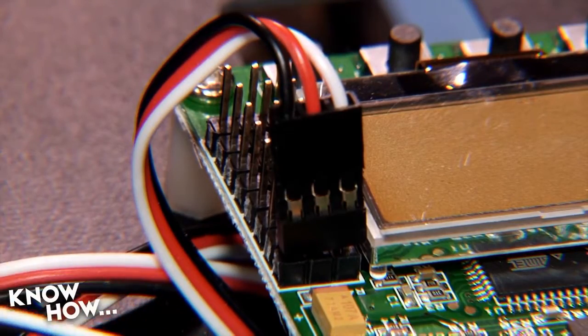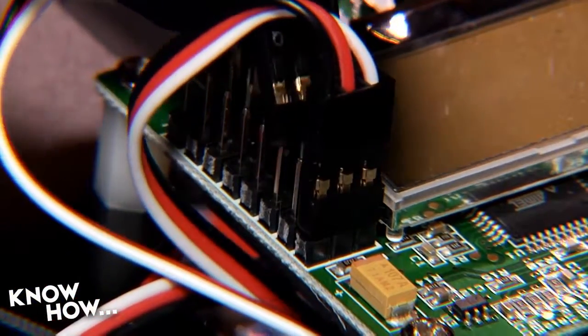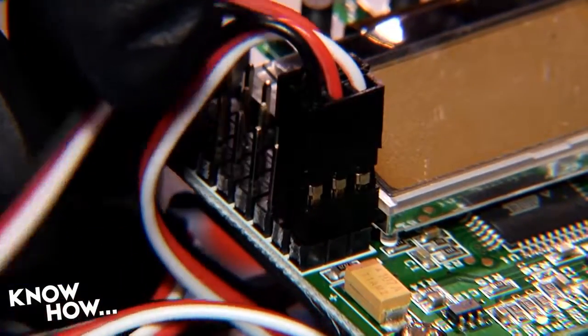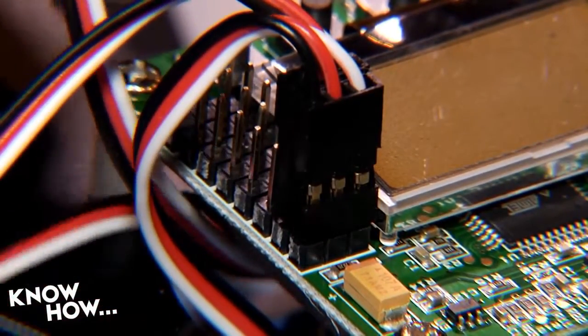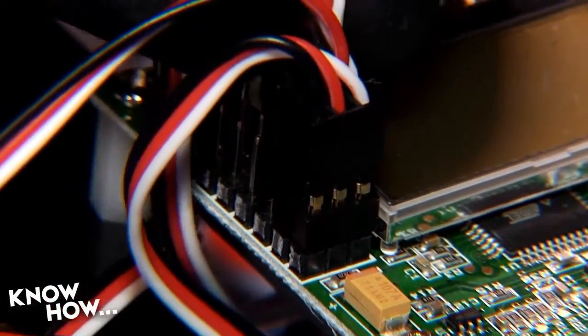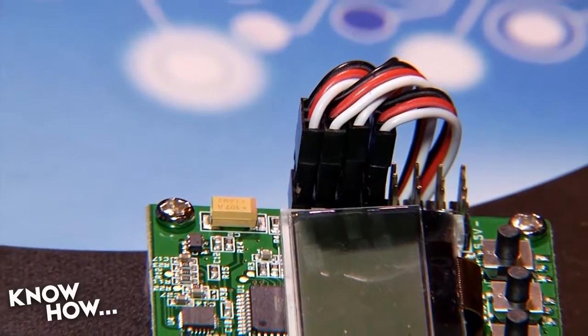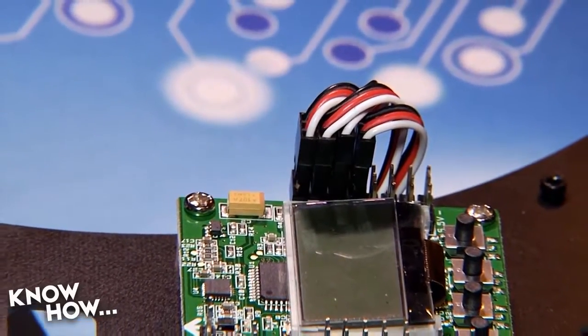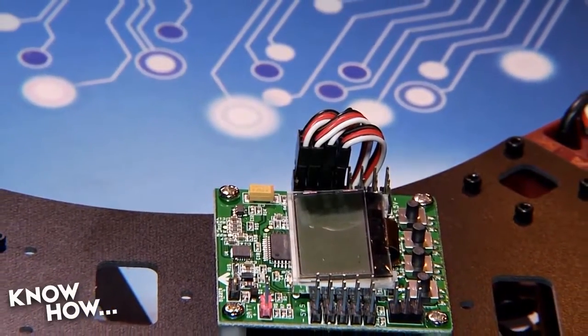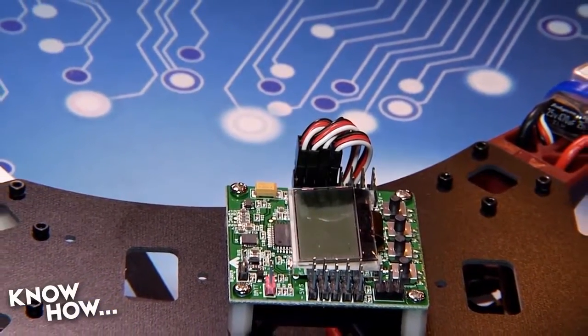The ESCs will be connected to the row of pins to the right of the KK, with the topmost set of pins for ESC1, the second set for ESC2, and so forth. The numbering of the ESC is the same as the arm number I had you mark earlier. When connecting the ESC to the controller, make sure the ground wire, usually black, is to the outside of the board, the positive wire is to the middle, and the signal cable, usually yellow or white, is to the inside.